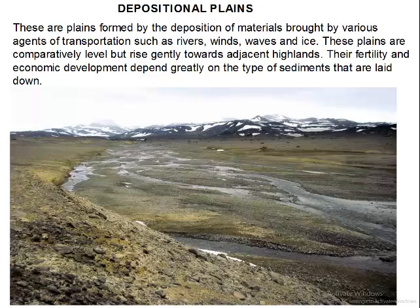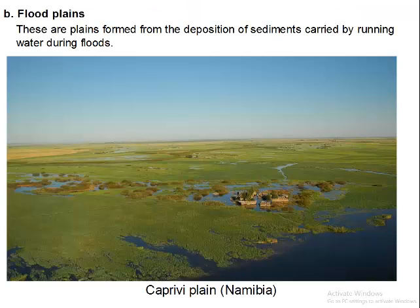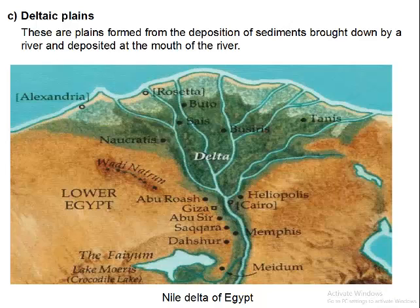We looked at some of them which we are going to continue today. We talked about the Alluvial Plains — Plains formed when a river takes materials from the upper course and deposits them at the lower course, forming what we call Alluvial Plains. We also talked about Flood Plains, which are Plains formed as a result of flooding, where during floods materials are taken and deposited to form an extensive land. Then we also talked about the Delta Plains.